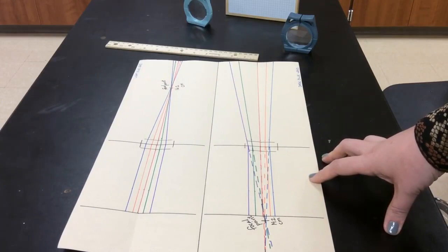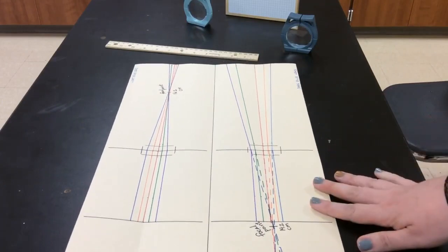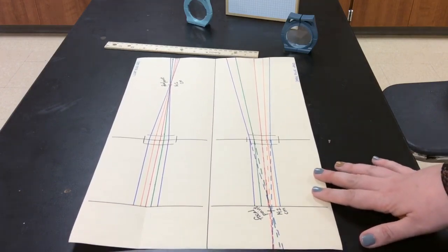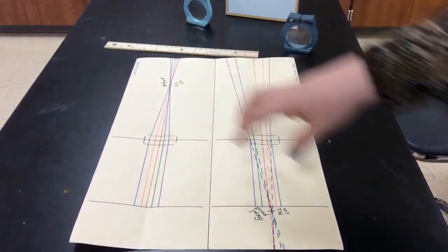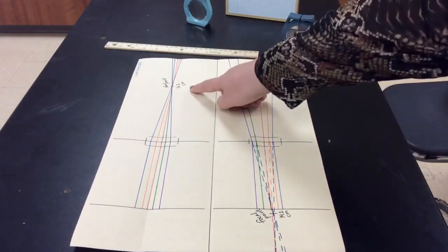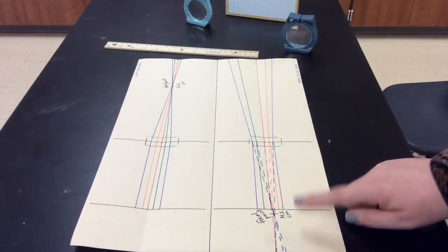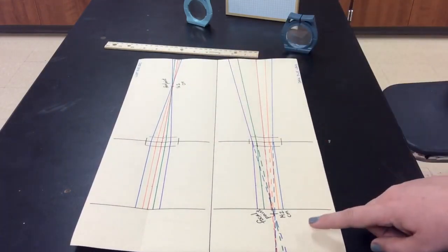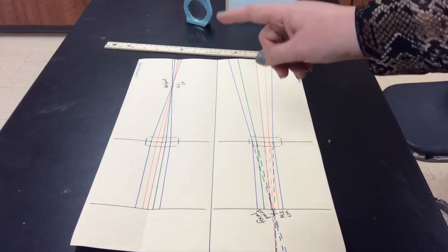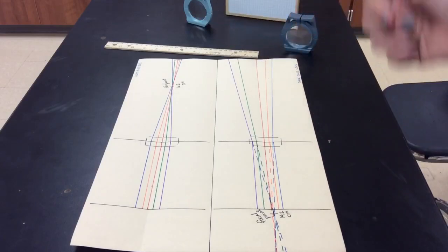And then again just like with the first one, tell me what kind of lens is that based on what you've seen here. Is it a convex or a concave lens? Be sure to write that in your journal as well. So your completed journal page should have both of these sketches, both of the focal points marked with the measurement, and what kind of lens it is, concave or convex.